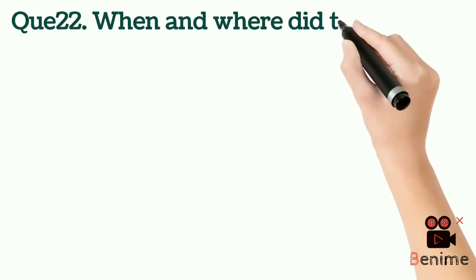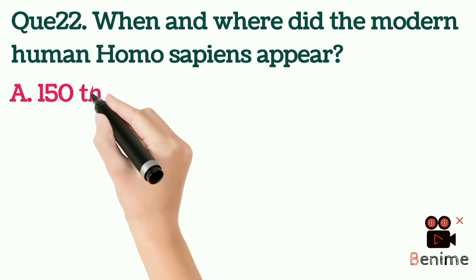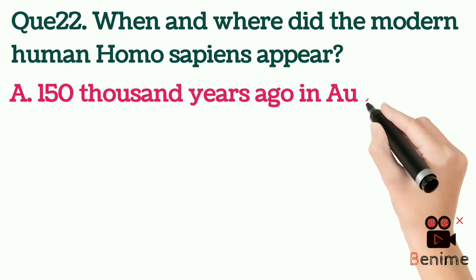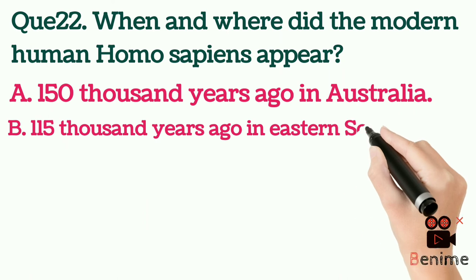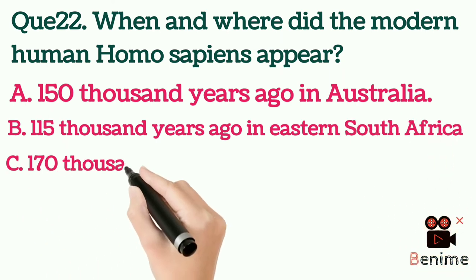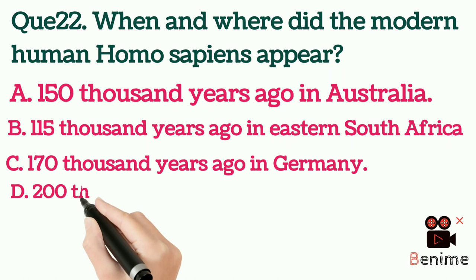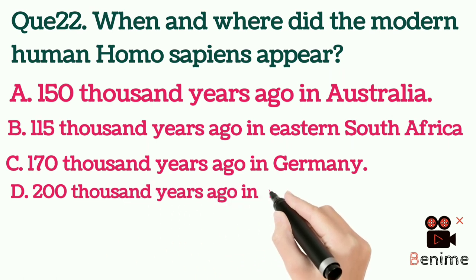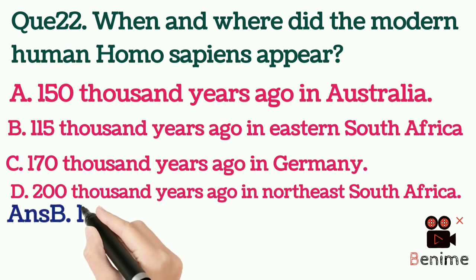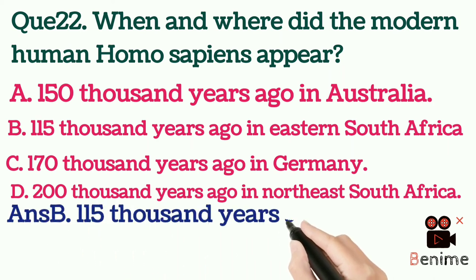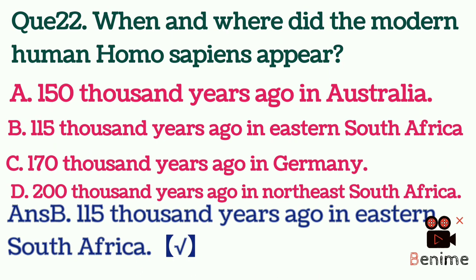Question 22: When and where did modern human Homo sapiens appear? A. 150,000 years ago in Australia. B. 115,000 years ago in Eastern South Africa. C. 170,000 years ago in Germany. D. 200,000 years ago in North East South Africa. Answer B: 115,000 years ago in Eastern South Africa.